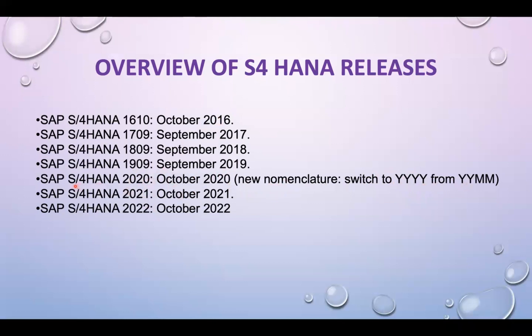That's why from 2020 onwards you can see S/4HANA 2020, S/4HANA 2021, and S/4HANA 2022. They can release in any month — September, October, or something — but the name will be the year. For example, 2023 is going to come, so it will be S/4HANA 2023. Don't confuse with the month and year anymore, because all releases going forward will simply be named by year, like S/4HANA 2023.